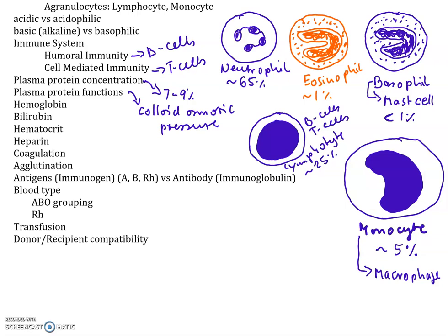The hematocrit is always expressed as a percent — it's the percent solid in your blood. If you put blood in a capillary or centrifuge tube and centrifuge it, it separates into liquid and solid, where the red blood cells and all solid cells settle to the bottom and the liquid is on top. The hematocrit is that percent solid. A typical hematocrit is about 45%, meaning 45% of your whole blood is solid cells and 55% is plasma, the liquid.